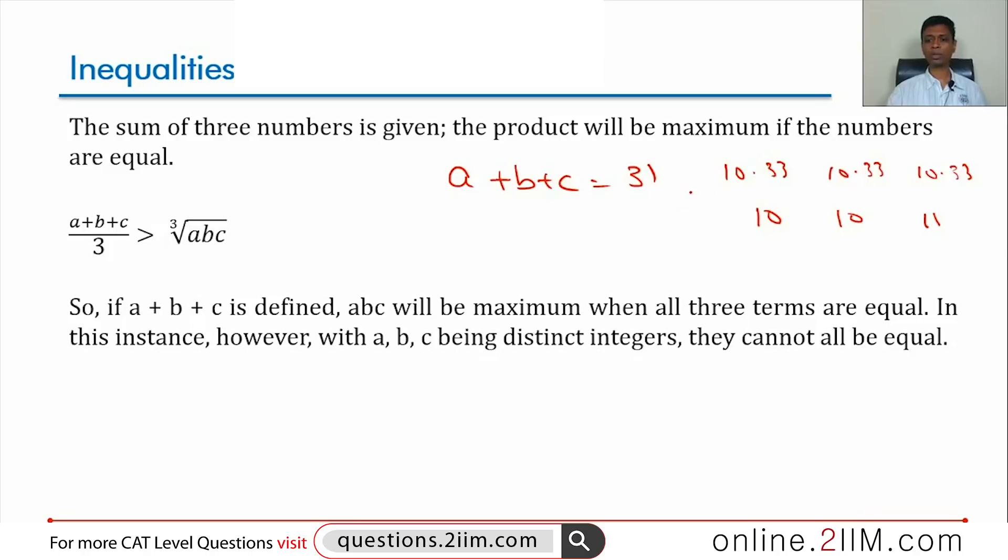The closest 31 by 3 gets to is 10. Let us keep 10 as one of the numbers. That means the other two, B plus C should add up to 21. It cannot be 10 and 11. It can be 9 and 12. 10, 9, 12 is where the numbers are close to each other and the numbers add up to 31. So, the product could be high.